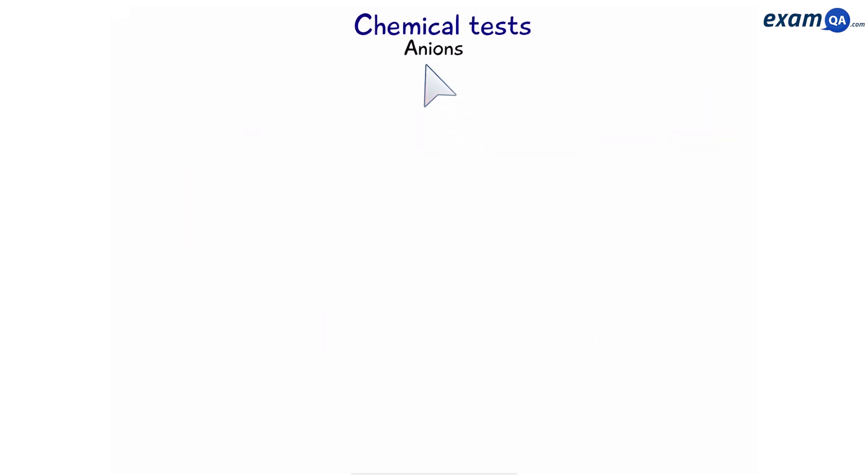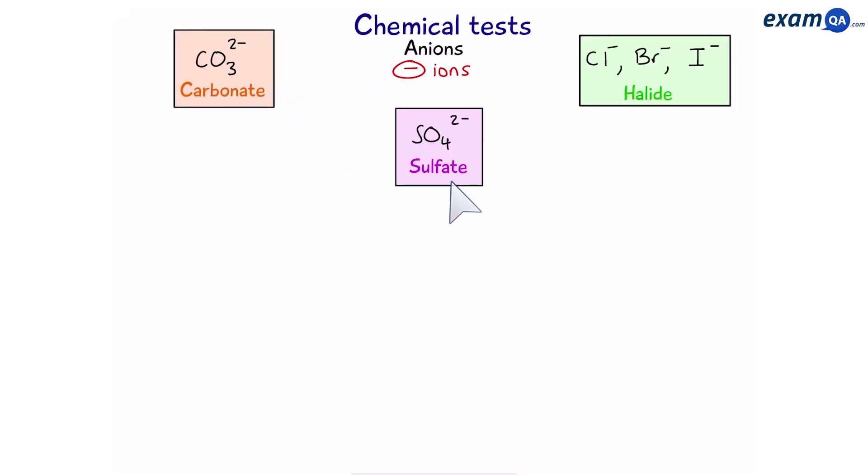Testing for anions. Anions are negatively charged ions. Examples are carbonate, sulfate and the halides chloride, bromide and iodide.